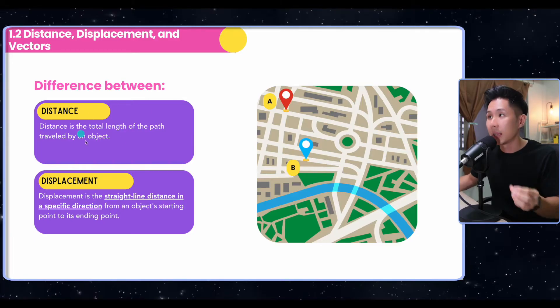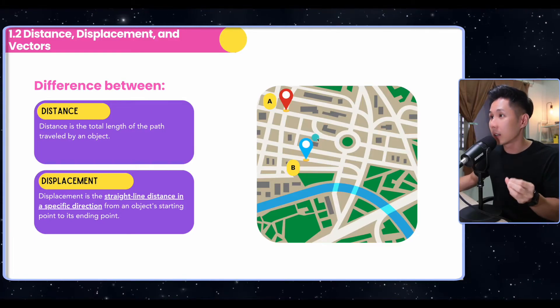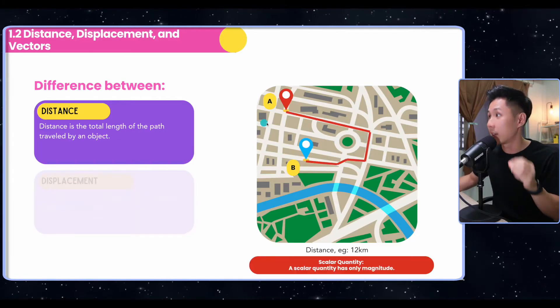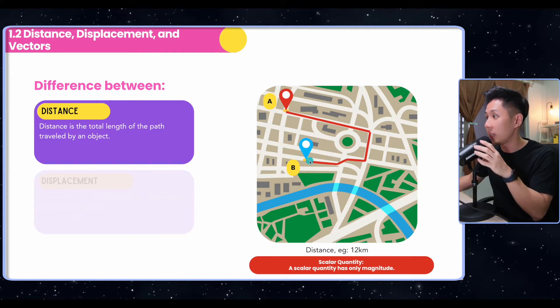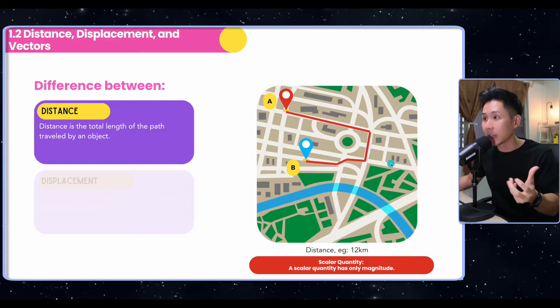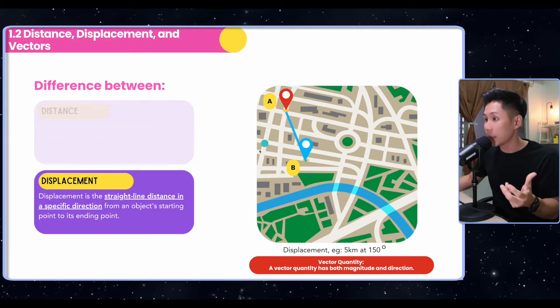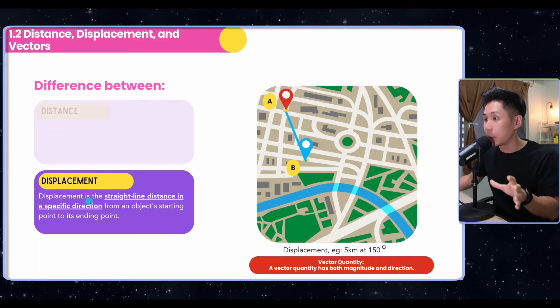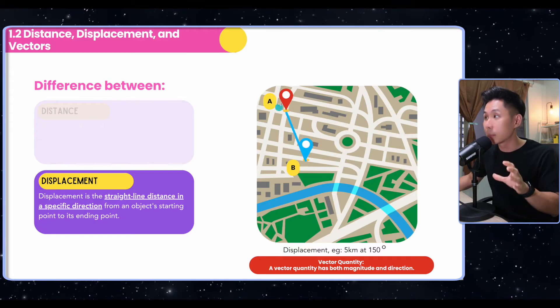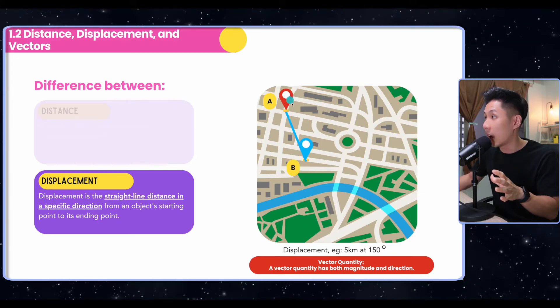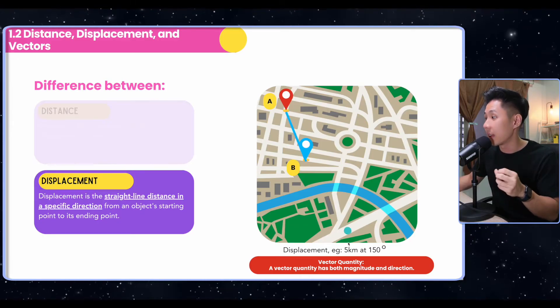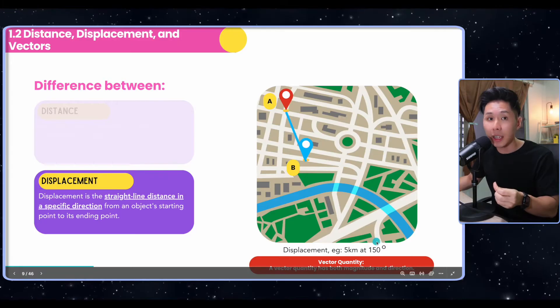Next we're going to learn something new that is not in IGCSE, which is the concept of displacement. Distance is the total length of the path traveled by an object, for example from point A to point B. Displacement is slightly different because it involves direction. For example, A to B displacement is the straight line distance in a specific direction. You can see that in this case the direction is around 150 degrees.